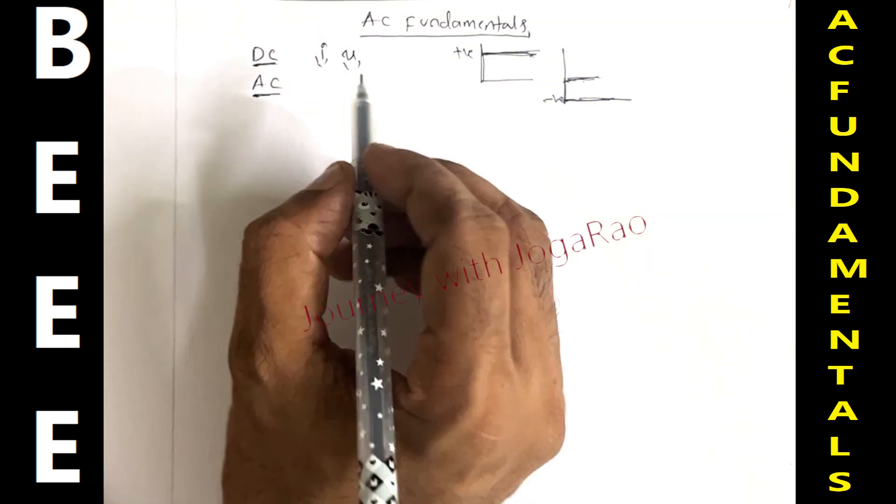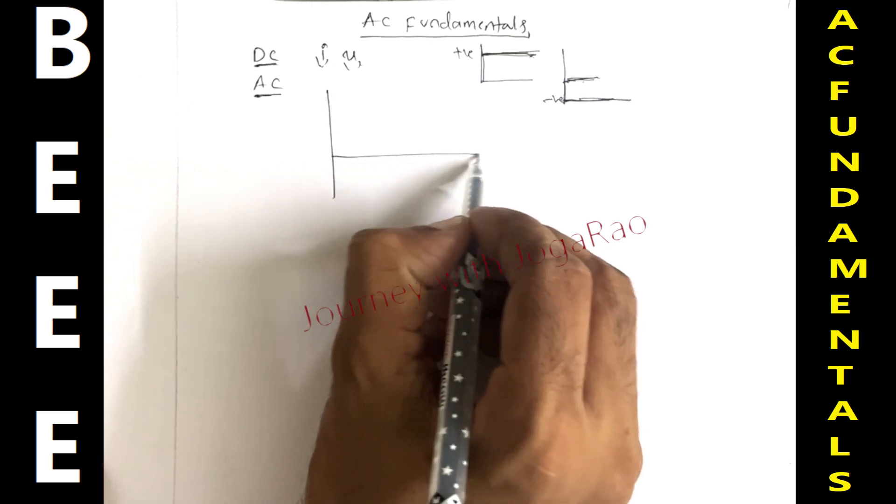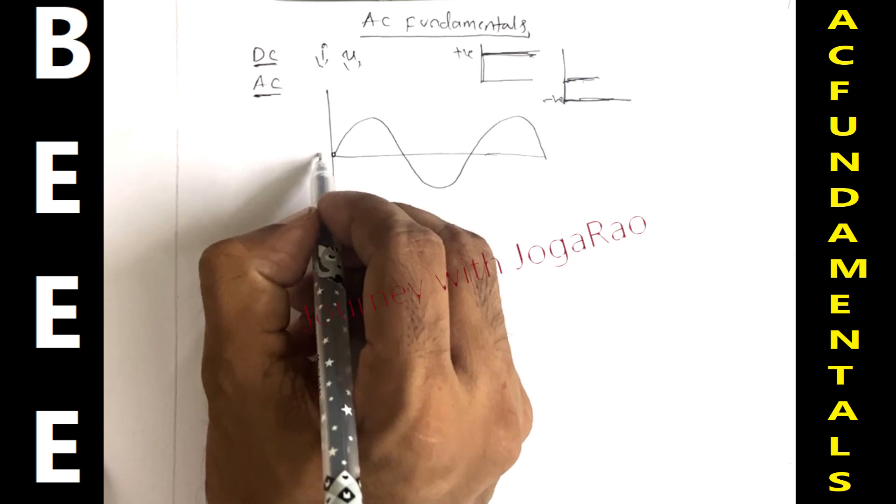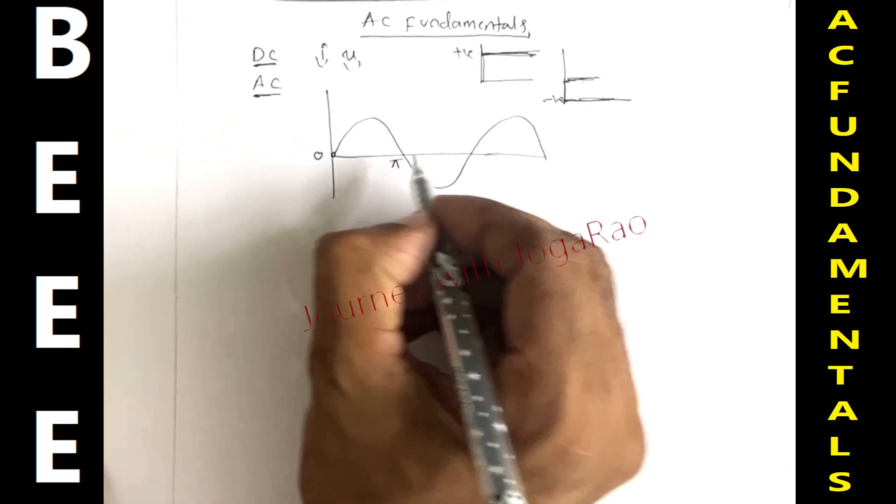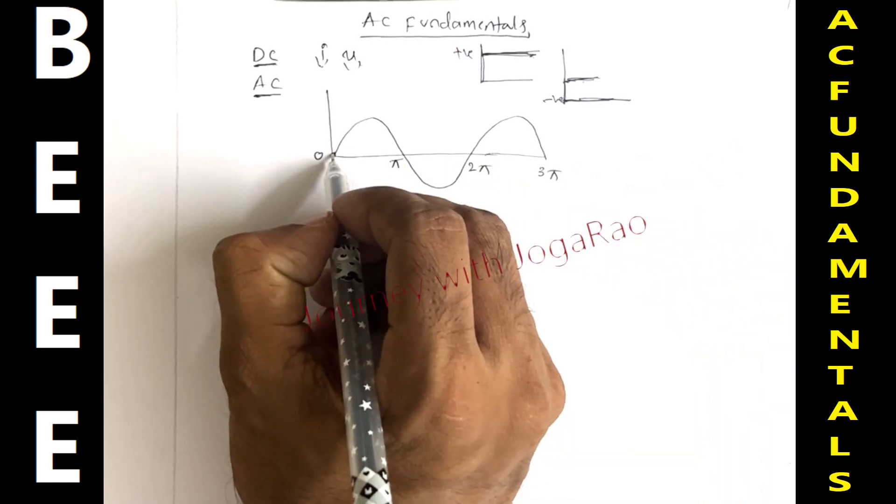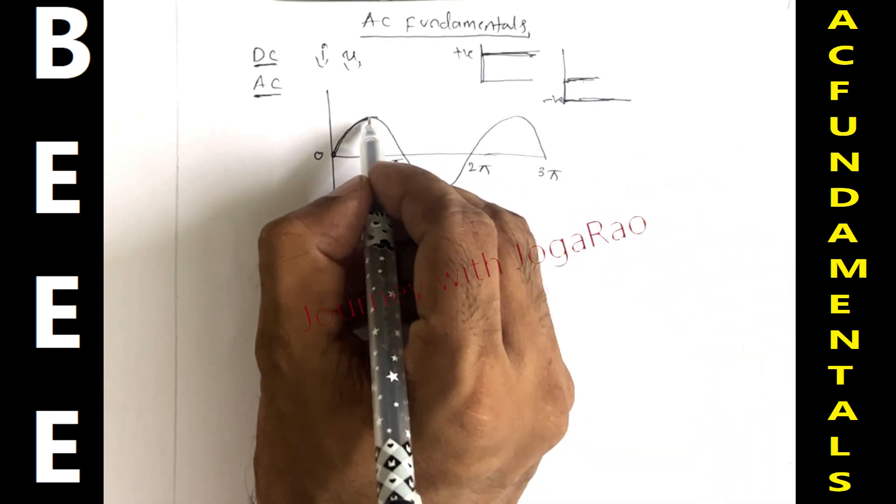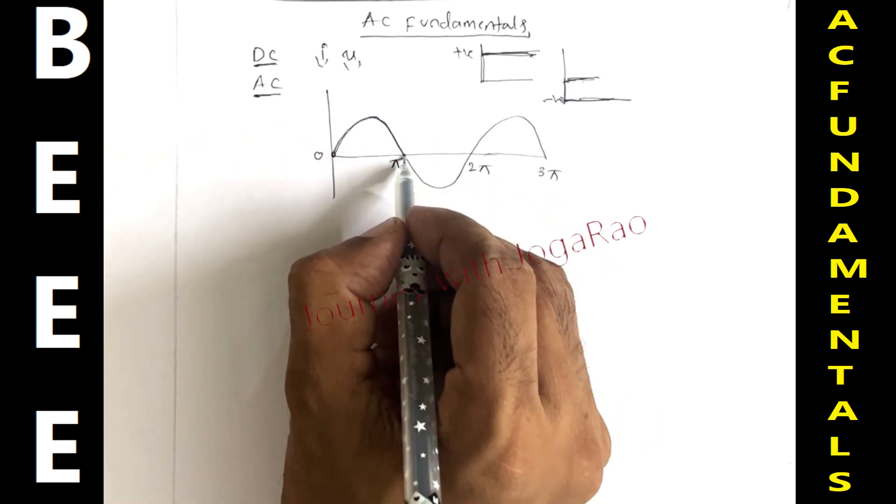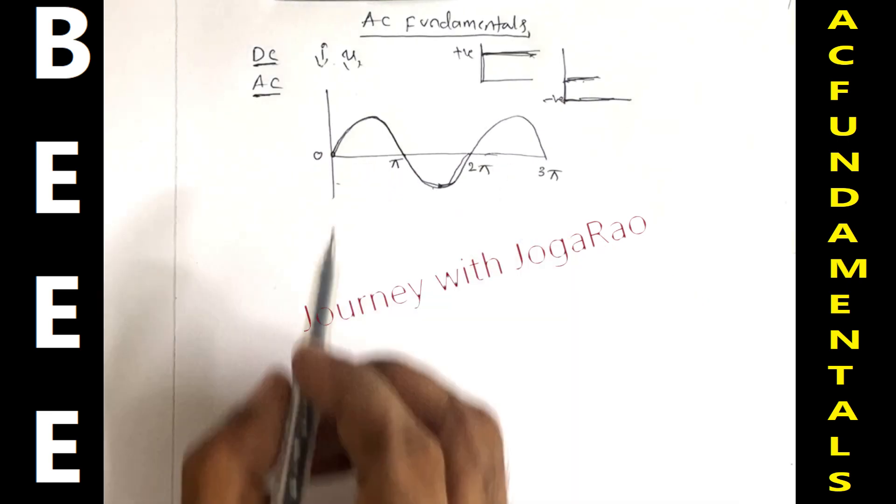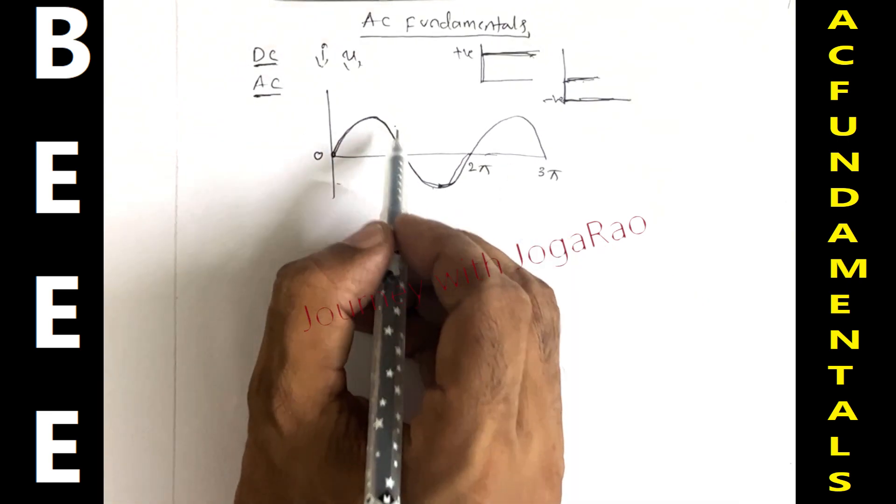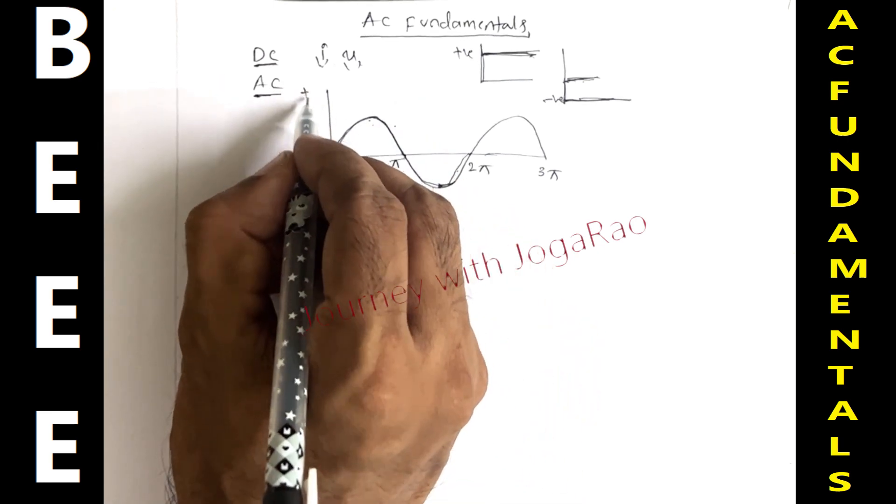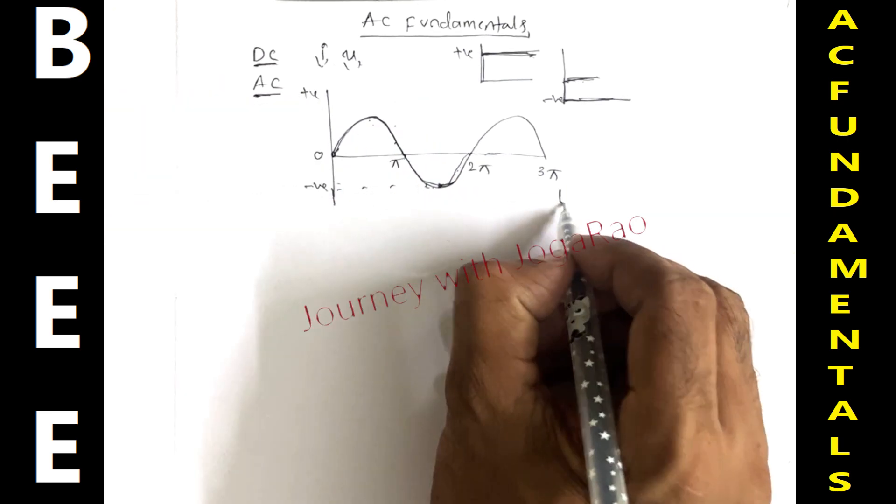And an alternating current, either voltage or current, basically represents a sinusoidal waveform. Suppose this is 0, this is pi, this is 2pi, this is 3pi. So 0 to maximum and maximum to again 0. In reverse direction, 0 to maximum again 0. That means it changes continuously in magnitude and changes its direction.